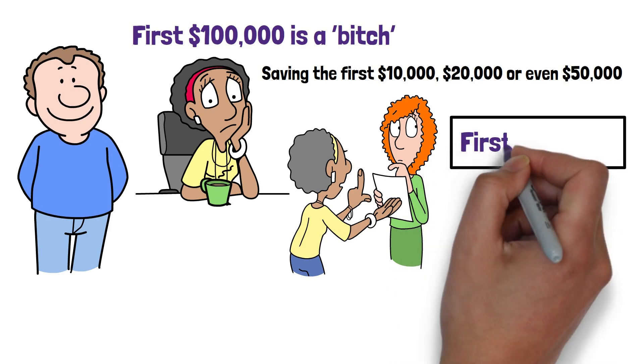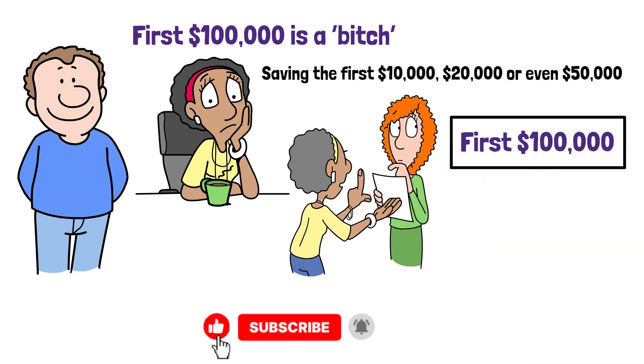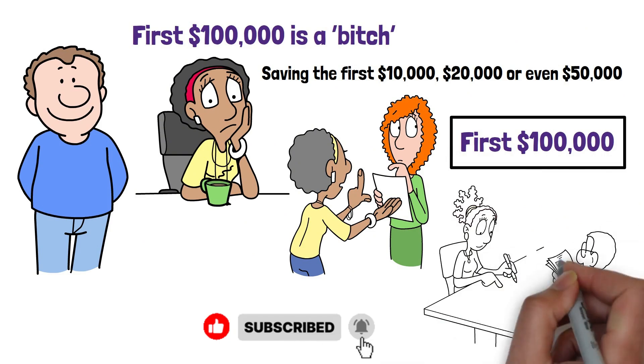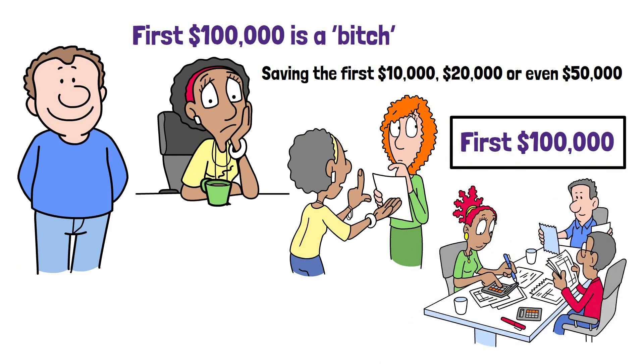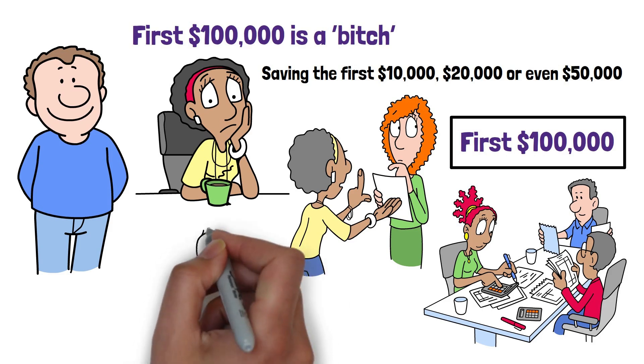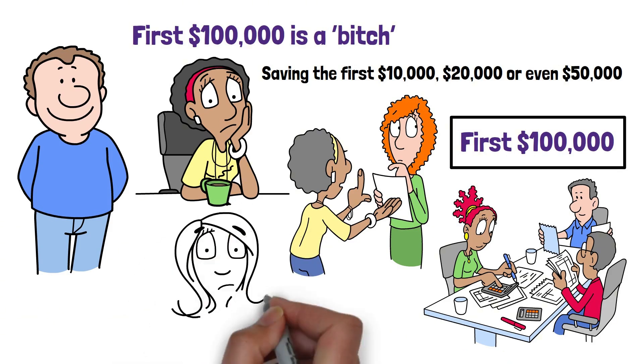The first $100,000 requires budgeting, consistency, emotional control, resisting lifestyle creep, and staying invested through every market dip. Most people never develop these habits.